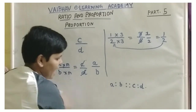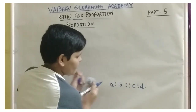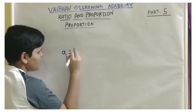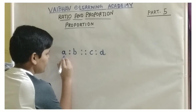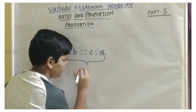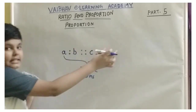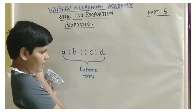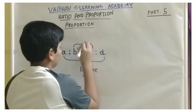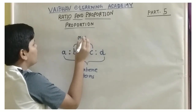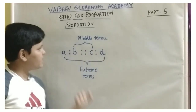Now, let us take a proportion: a is to b is proportional to c is to d. Here we have some terms to note. In the proportion a : b :: c : d, a and d are the extreme terms — as they are at the extremes — and b and c are the middle terms.